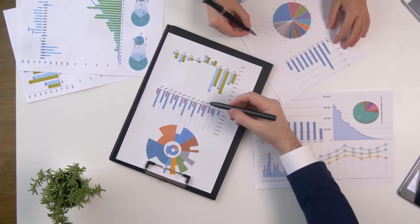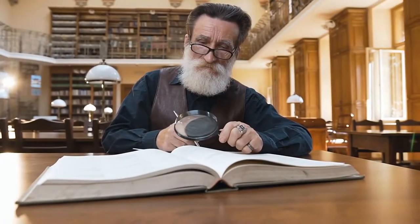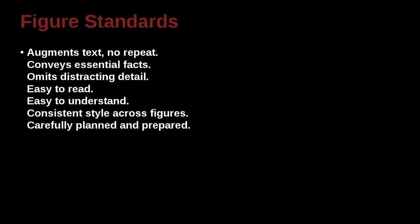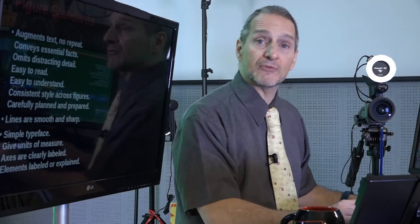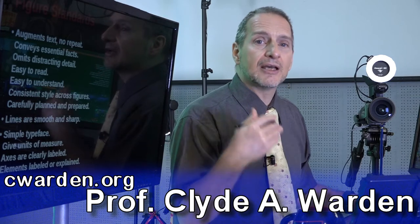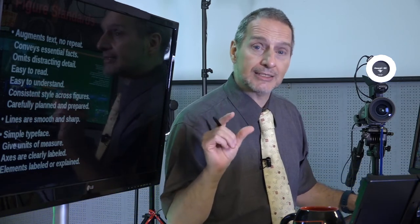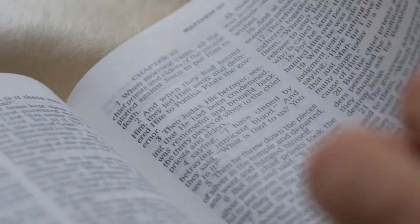It should be easy to read the numbers or words on it — which sounds simple but can actually be very hard to achieve. It should be consistent: if you make more than one figure, try to do it the same way every time, and you need to carefully plan it. Lines need to be smooth and sharp, and you need to keep your typeface — the fonts — very simple and straightforward. I always use Arial fonts and keep lines a certain thickness and arrows a certain size, so I don't need to repeat that every time. Inside your thesis, all figures should follow the same design.